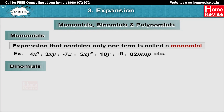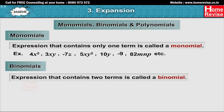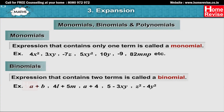Binomials: An expression that contains two terms is called a binomial. For example, a plus b, 4l plus 5m, a plus 4, 5 minus 3xy, z squared minus 4y squared, etc.